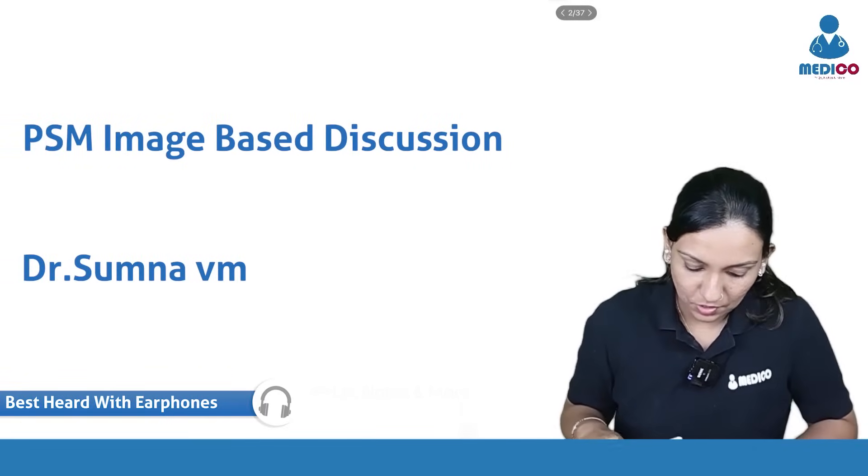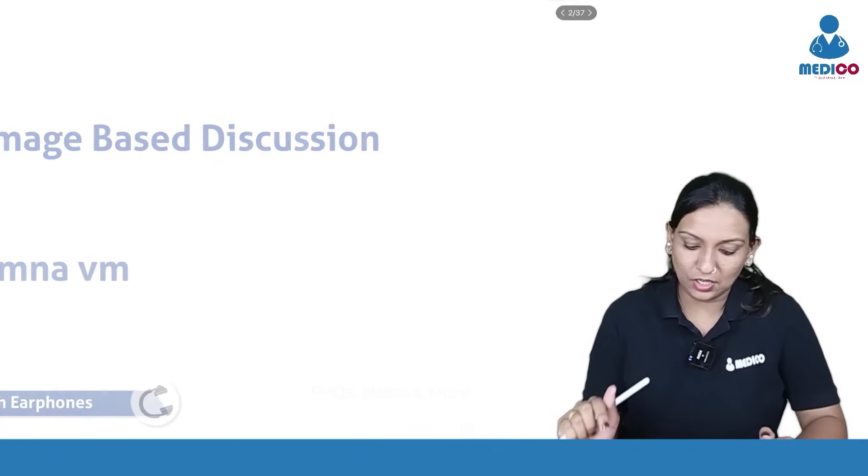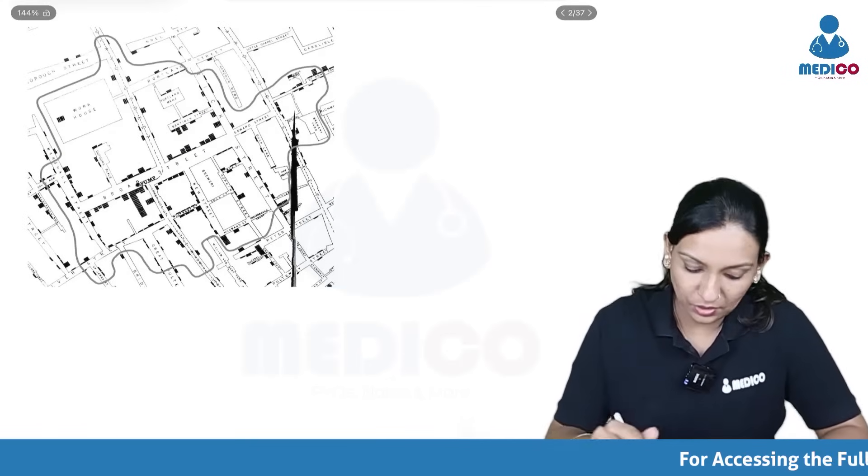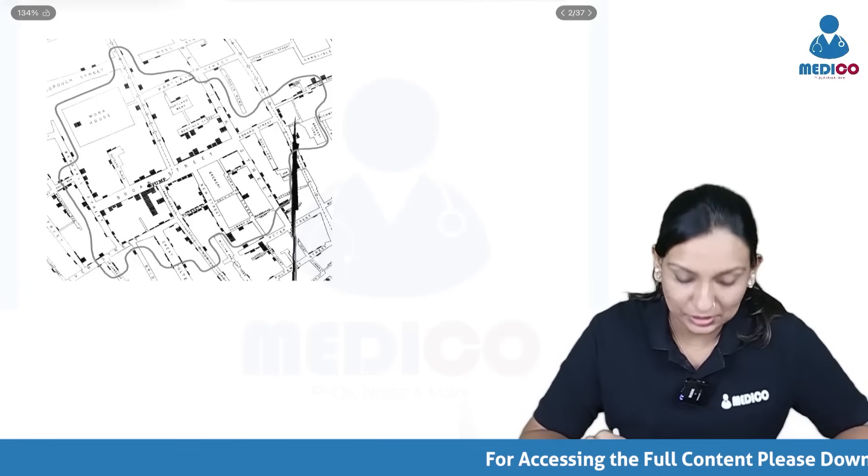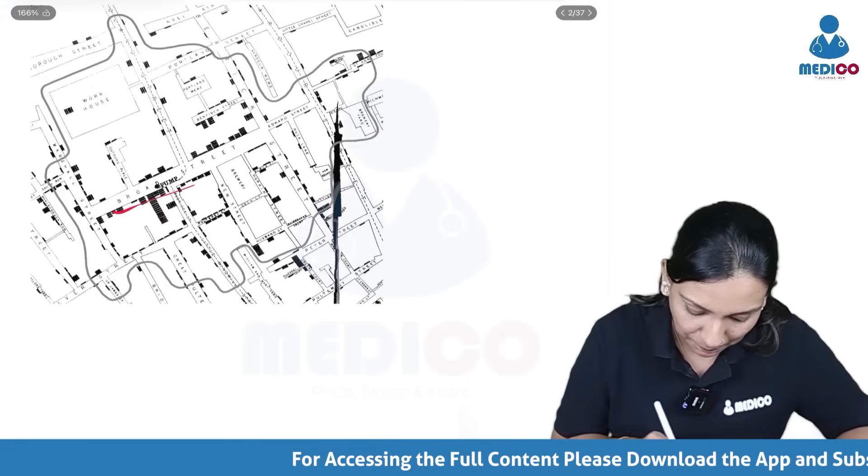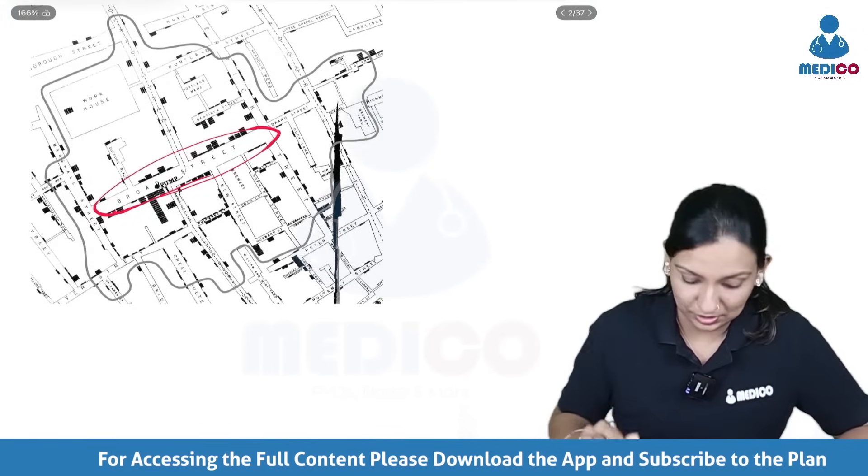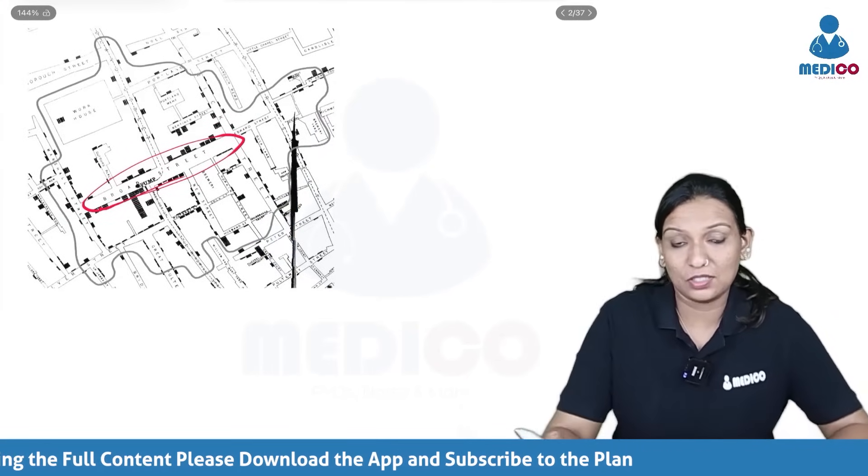So let's start. This is the first image you see on screen. What is this? What do you see on screen? You see a map, right? And you see something called the Broad Street Pump written here. So what is this map which you see on screen?